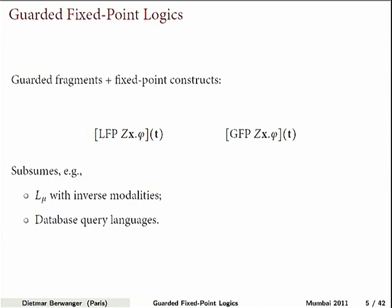So now we go to a logic that is stronger than the mu-calculus: first-order logic plus fixed points. We extend this guarded fragment with least fixed-point constructs, and we have the dual greatest fixed-point construct. What we are sure immediately that we can do is talk about the mu-calculus by referring to backwards modalities — instead of saying 'I have a successor with certain properties,' I can say 'I have a predecessor,' or talk about edges that form a loop, or about databases and higher-arity tuples.